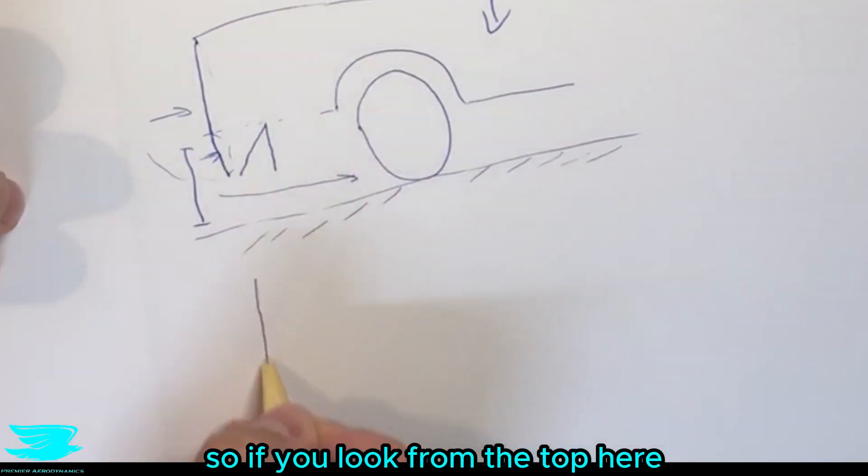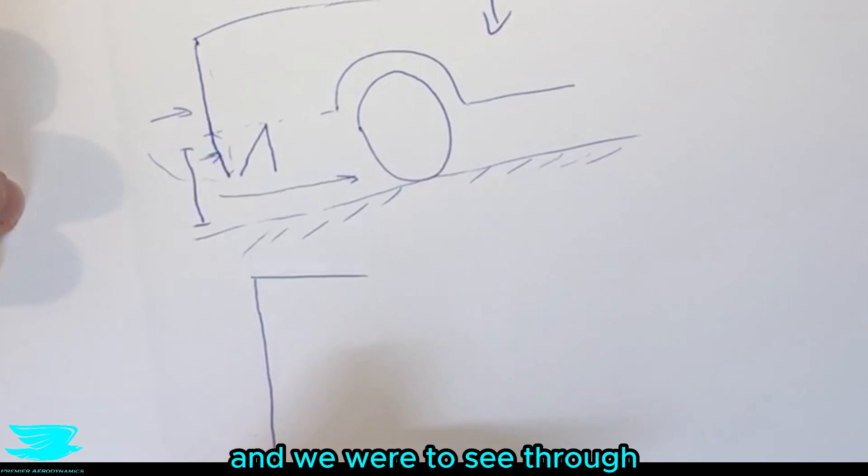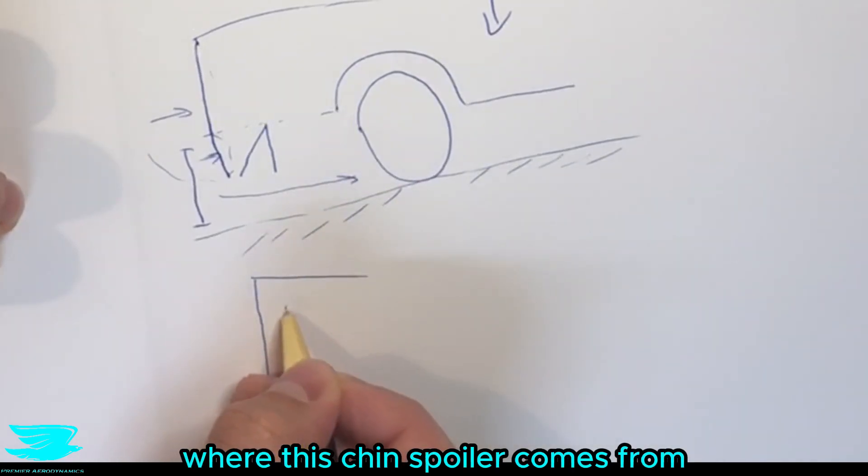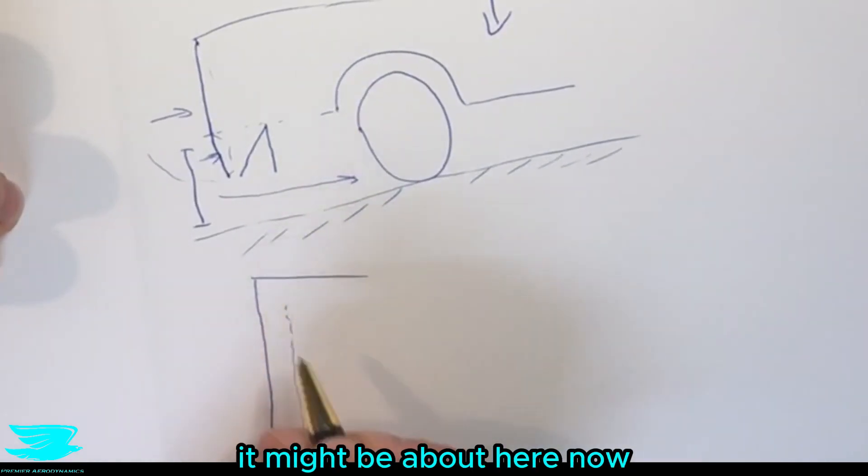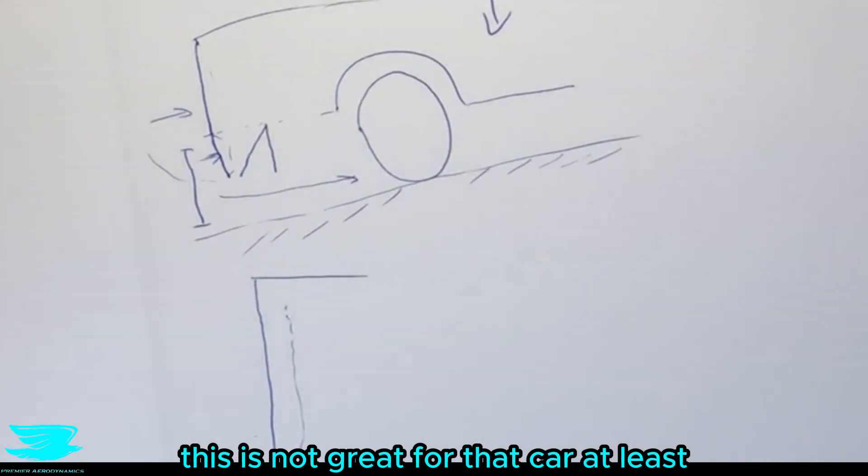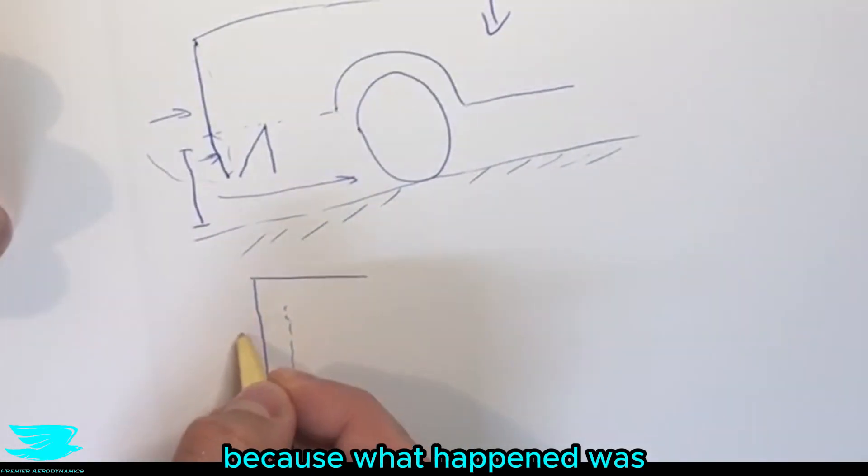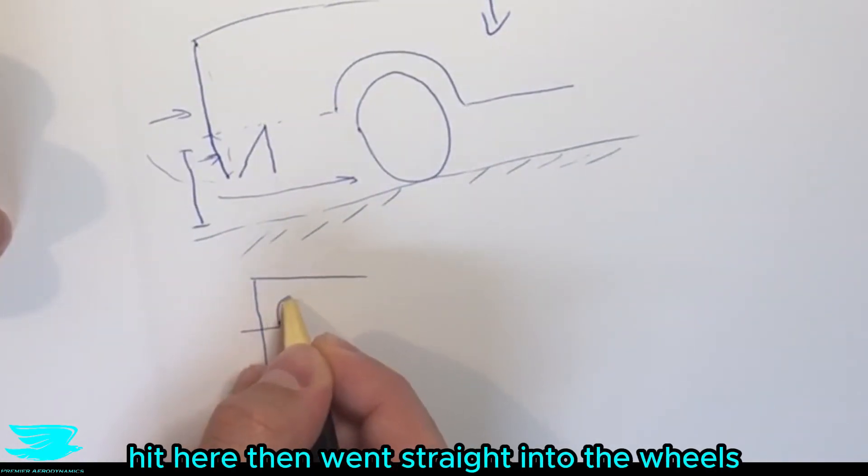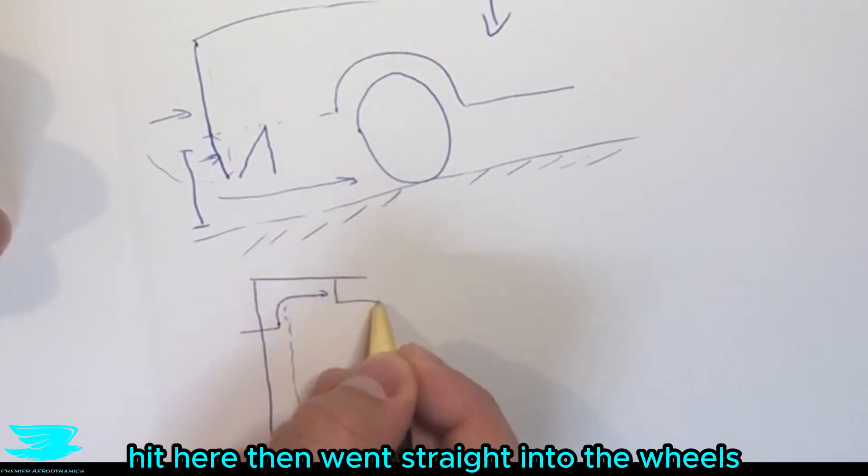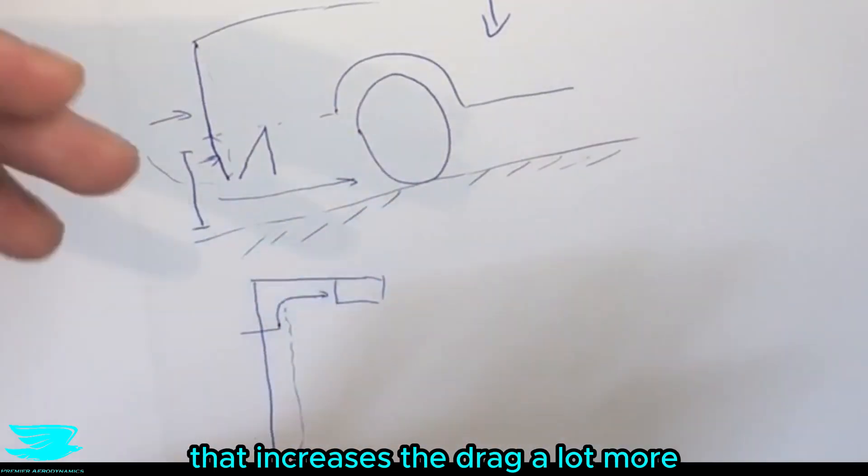So if we look from the top here and we were to see through where this chin spoiler comes from it might be about here. Now this is not great for that car at least because what happened was that the flow came along here, hit here, then went straight into the wheels. That increases the drag a lot more.